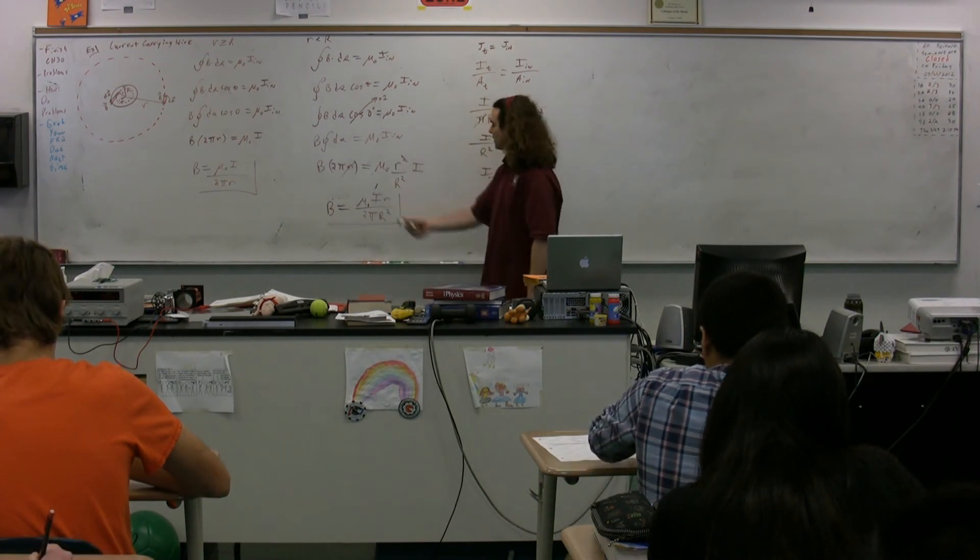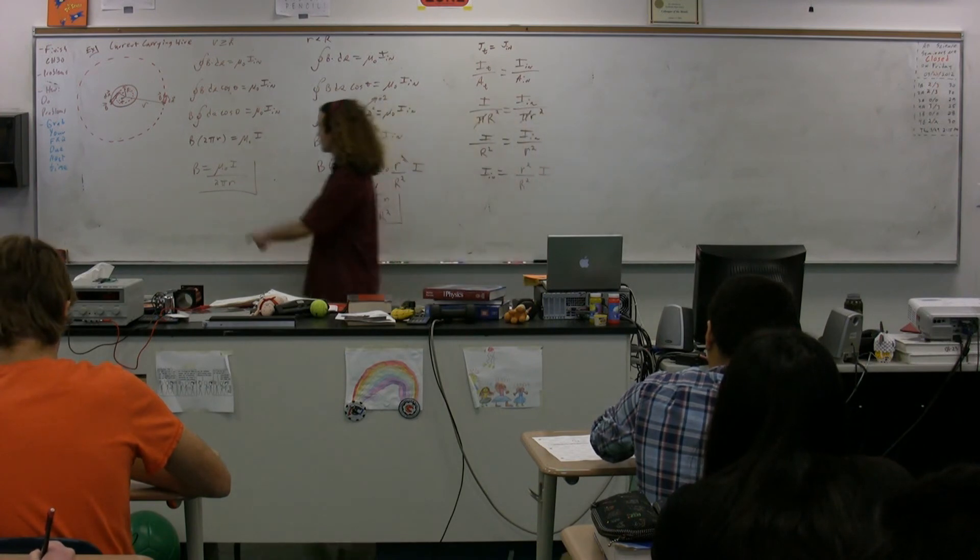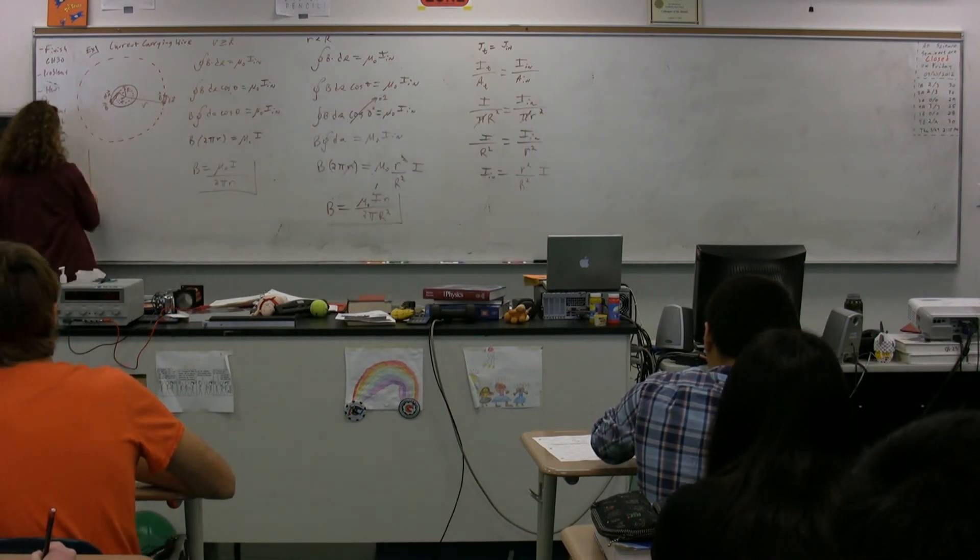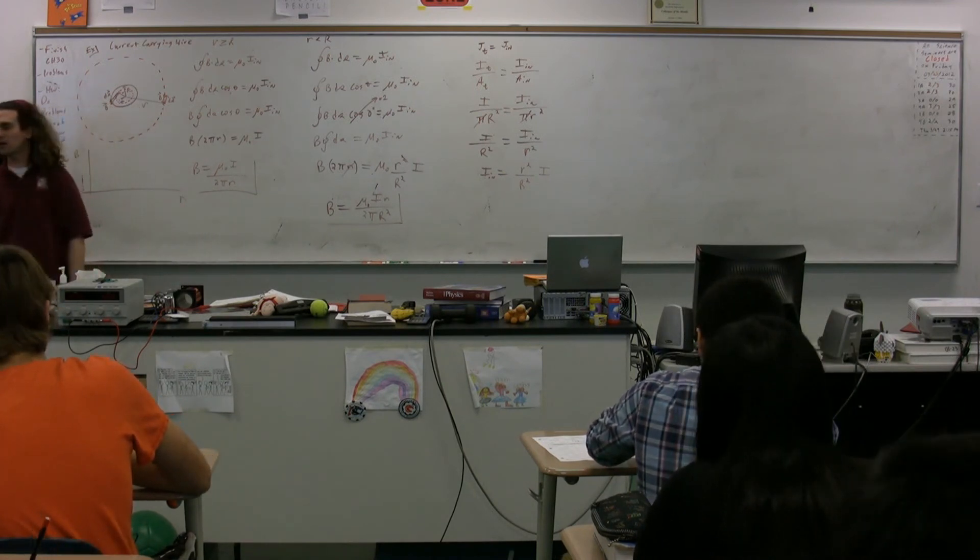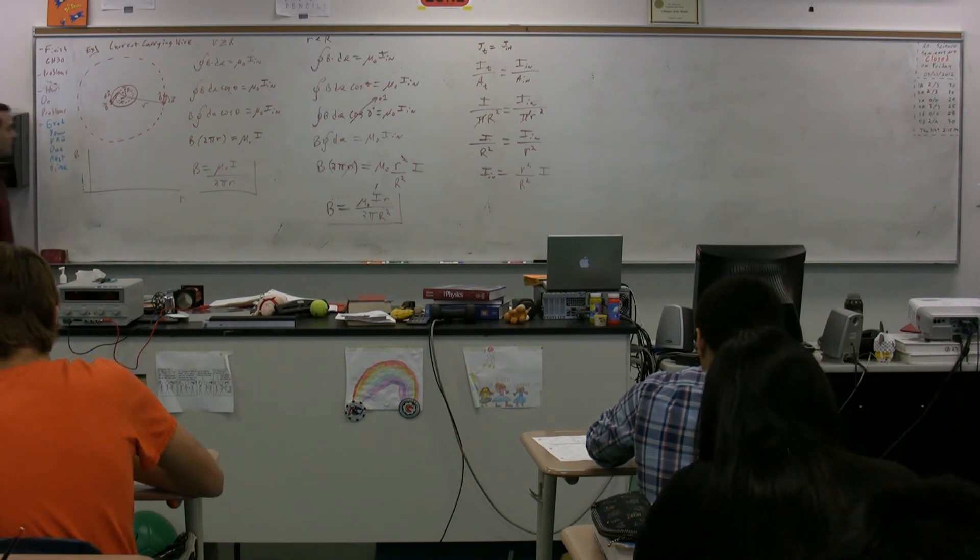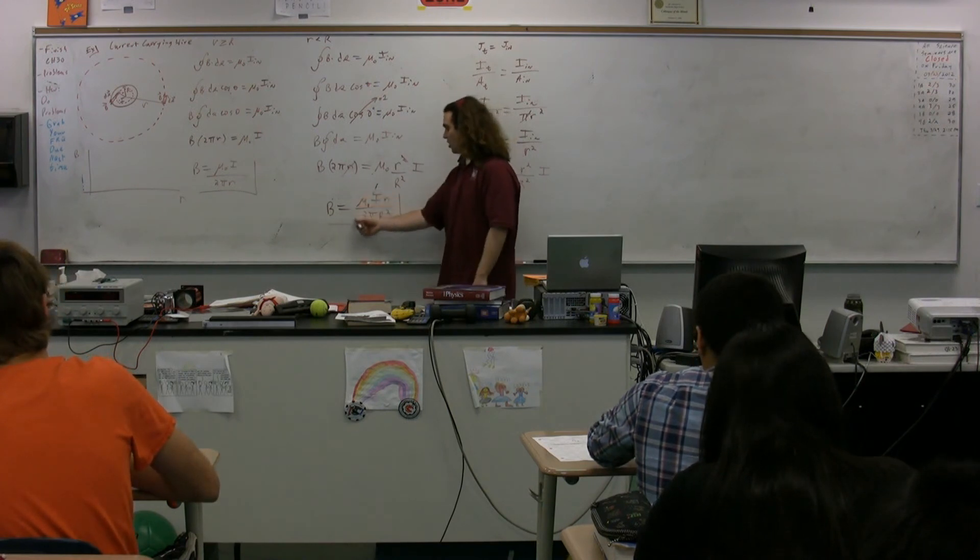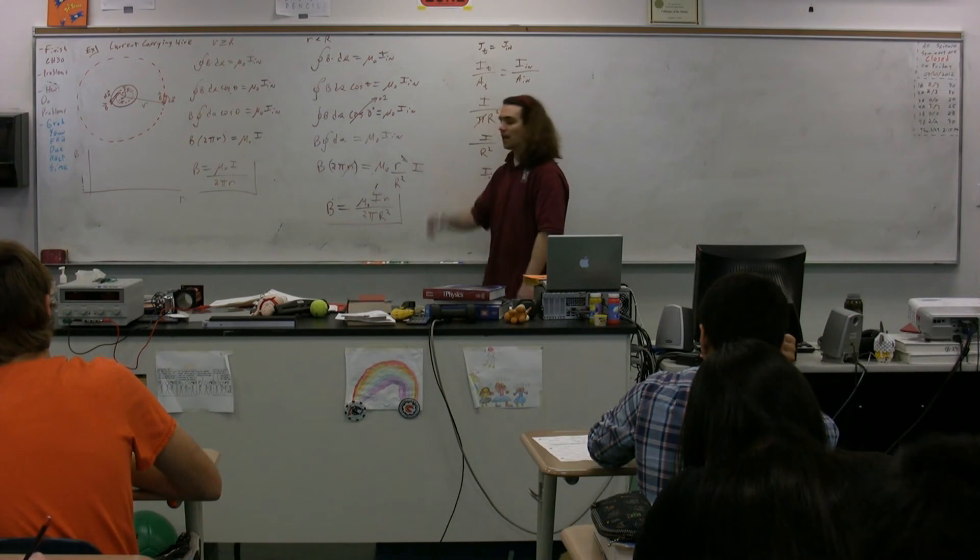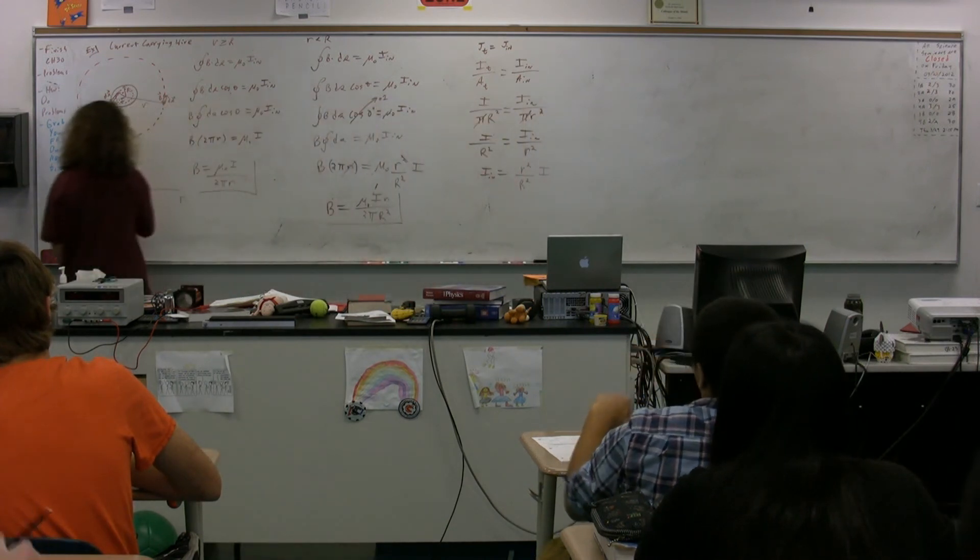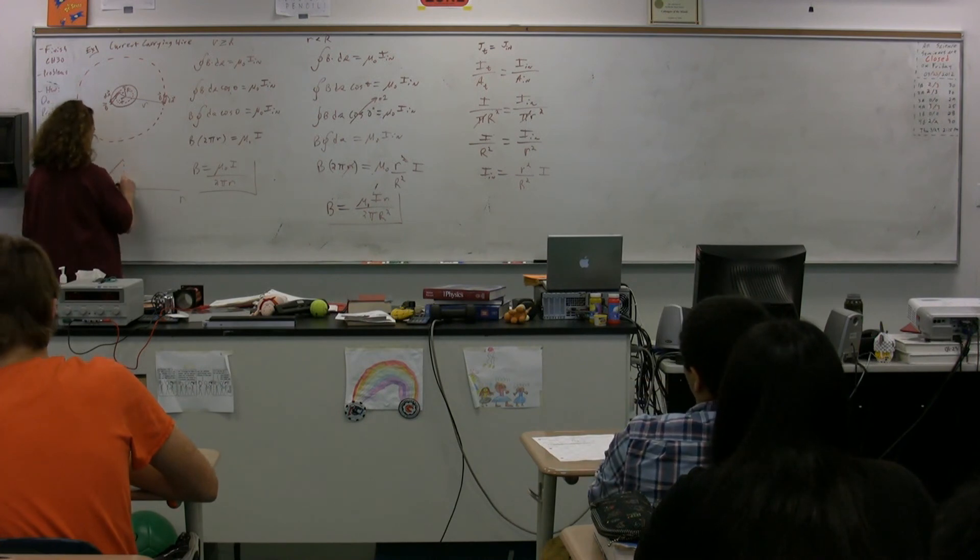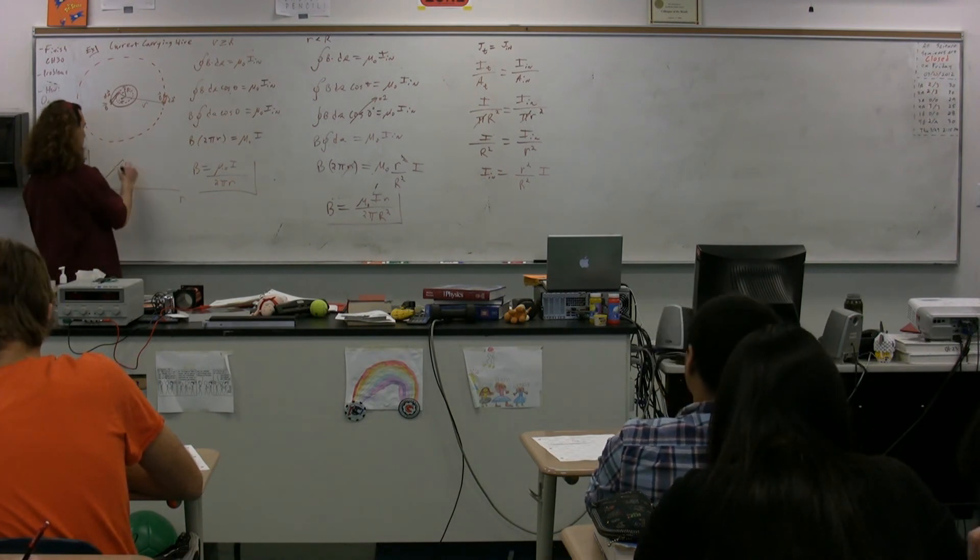And, they should match where little r equals big R. So, if we substitute in big R for little r, we get mu naught i over 2 pi r, which makes sense. The two are going to match. So, if we were to graph the magnetic field as a function of distance from the center of the wire, believe it or not, this mu naught i over 2 pi r squared, that is all just a constant. So, this is just y equals mx plus b, where b is equal to zero. This is a linear relationship. So, we're going to end up with just a line here until we get to big R, and then we switch to this equation, which is going to fall off as 1 over r.